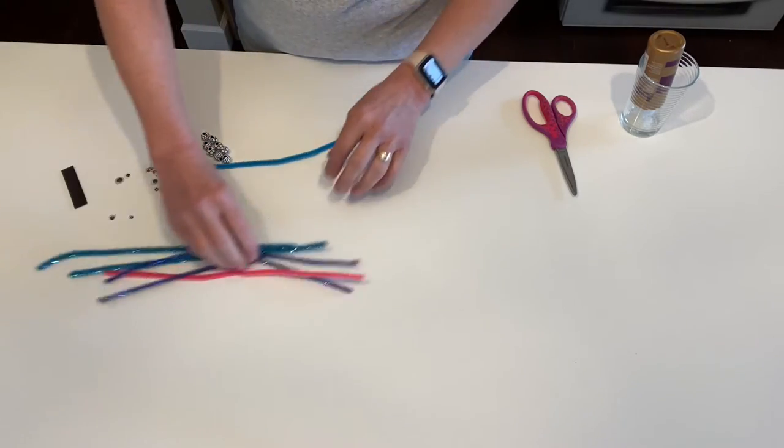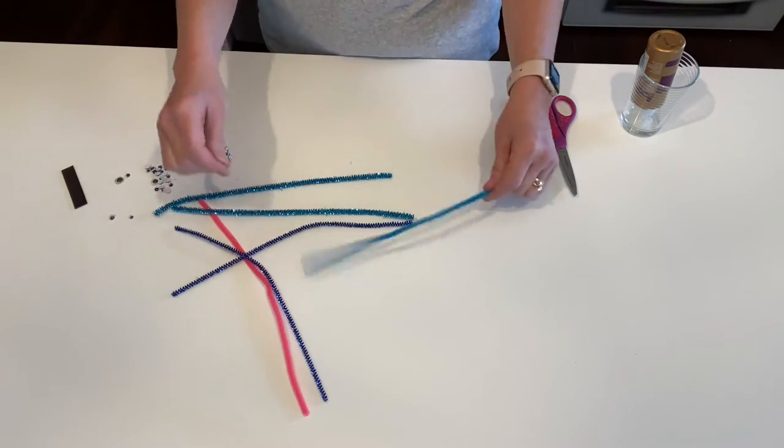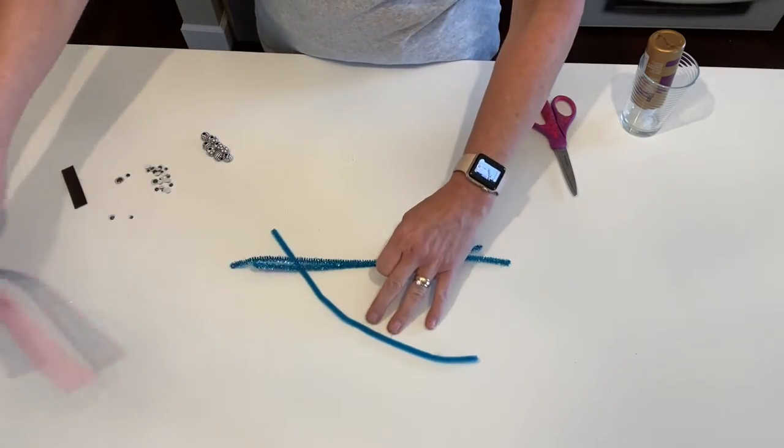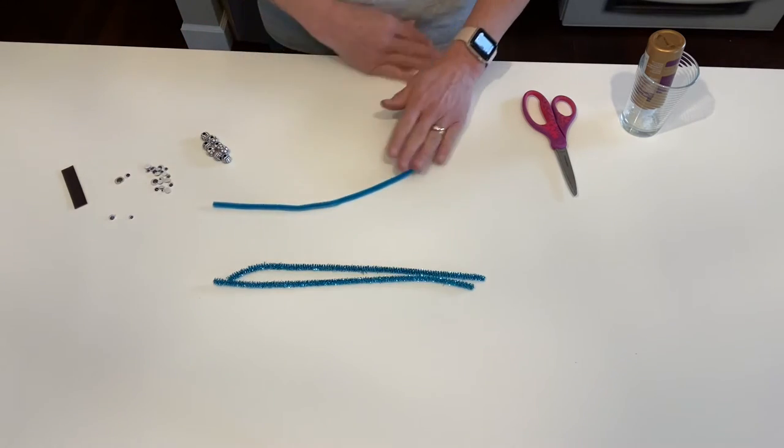Let's get started. I'm going to choose three pipe cleaners. I'm going to use the softer fuzzy one for the body and these two sparkly ones for the wings. You need three for each dragonfly.